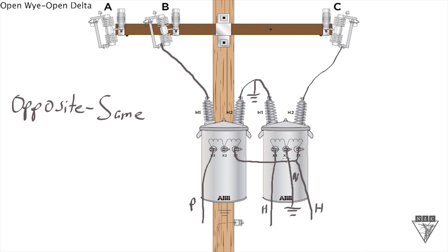Now if you look, our hot legs are on the transformer that has the X2 bushing as the neutral, and then our power leg is on the transformer that's not utilizing the X2 bushing. That's how we identify our power leg, it's on the transformer that doesn't have the X2 bushing connected.